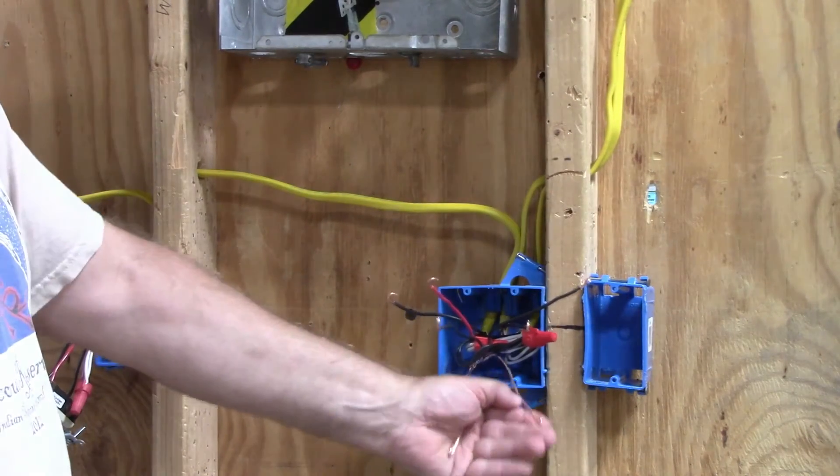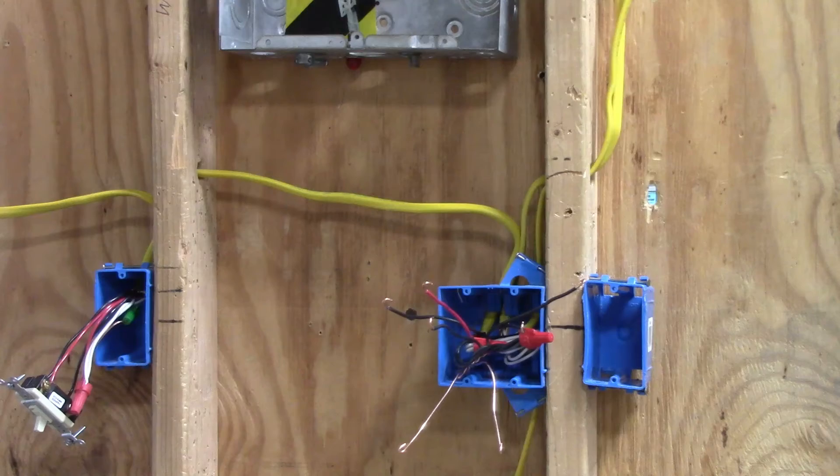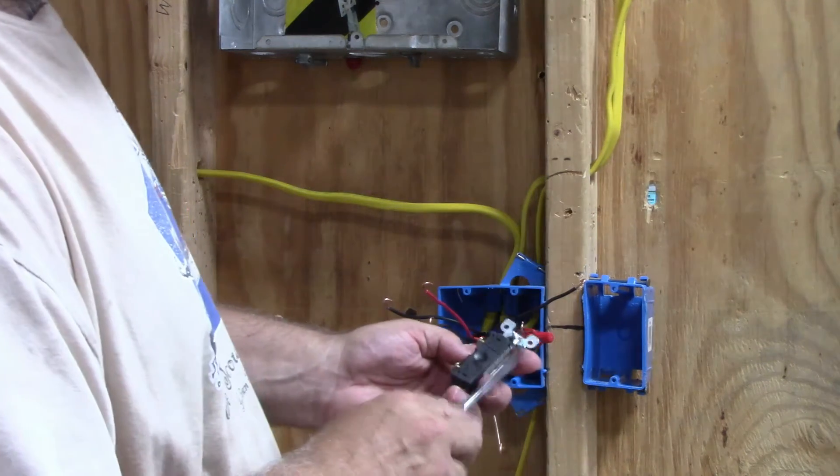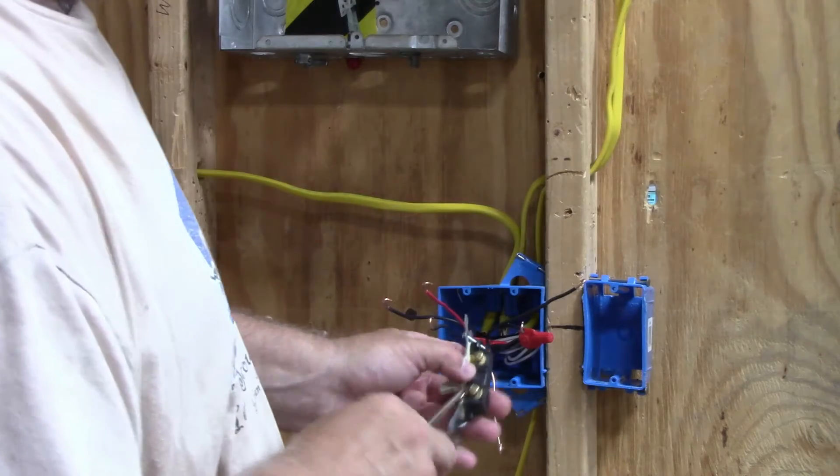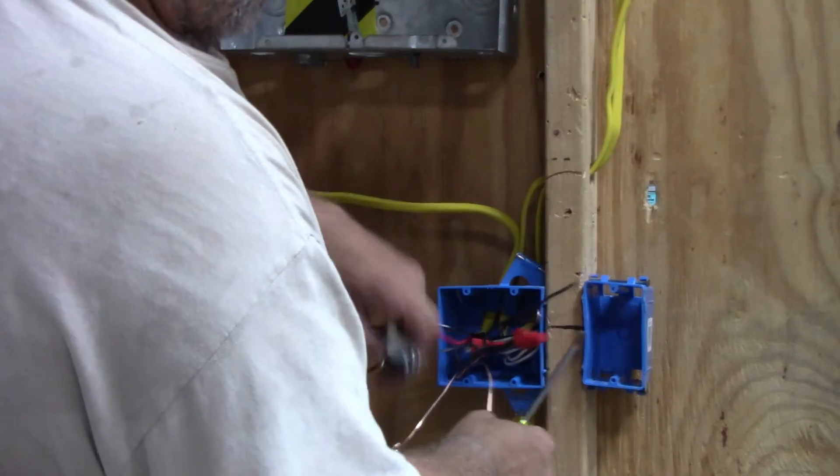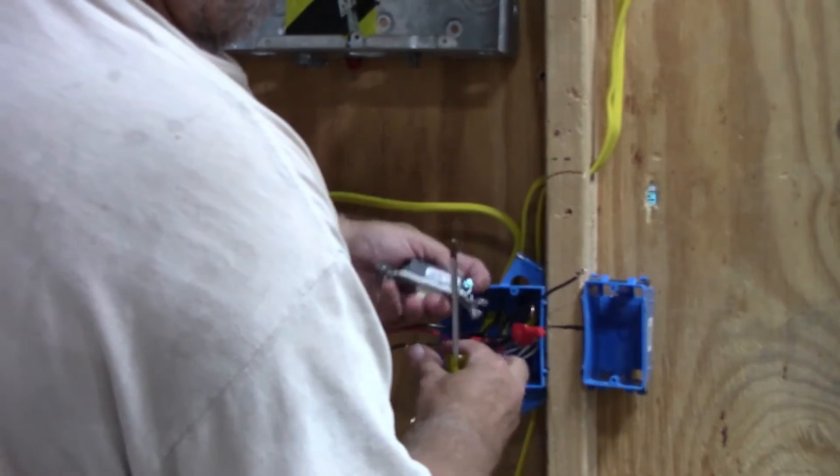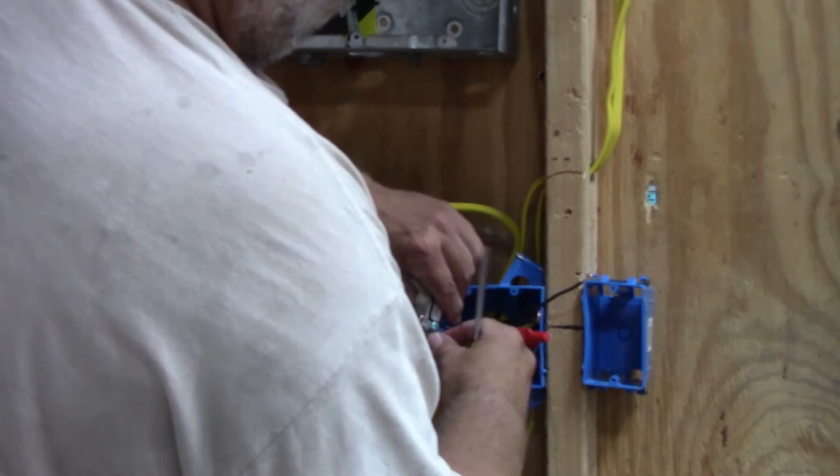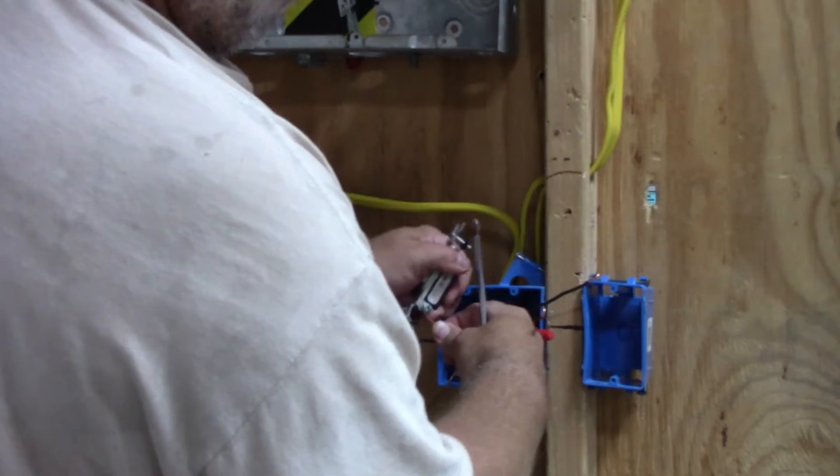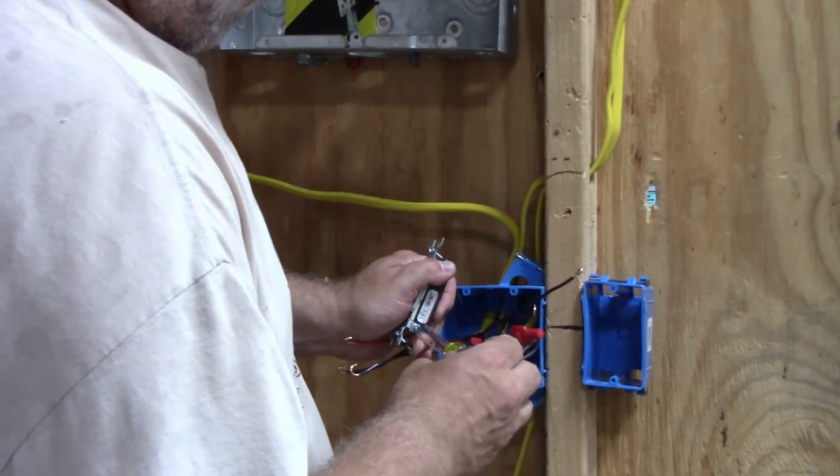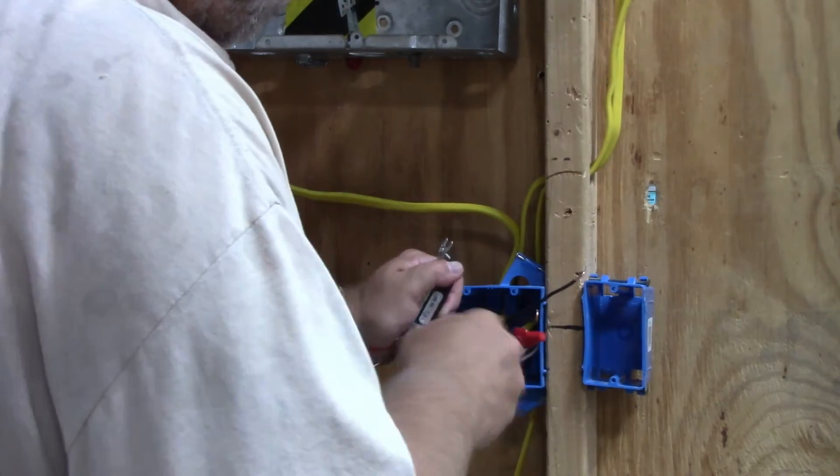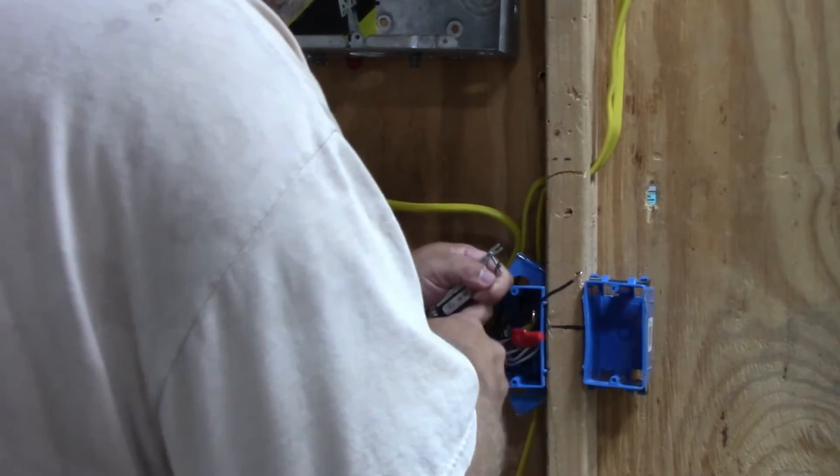Now all of the wires are ready. I'll do the single pole switch first. We have room for a ground, a hot, and a switch leg. It doesn't matter where the hot or the switch leg goes. Put the ground on the ground screw. Make sure you get it good and tight so you don't get an open ground.